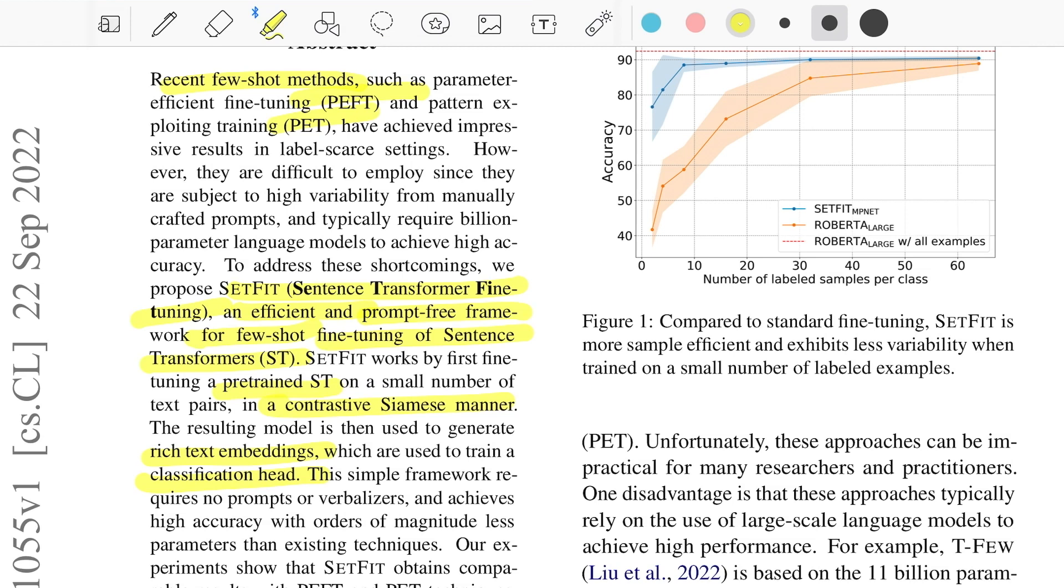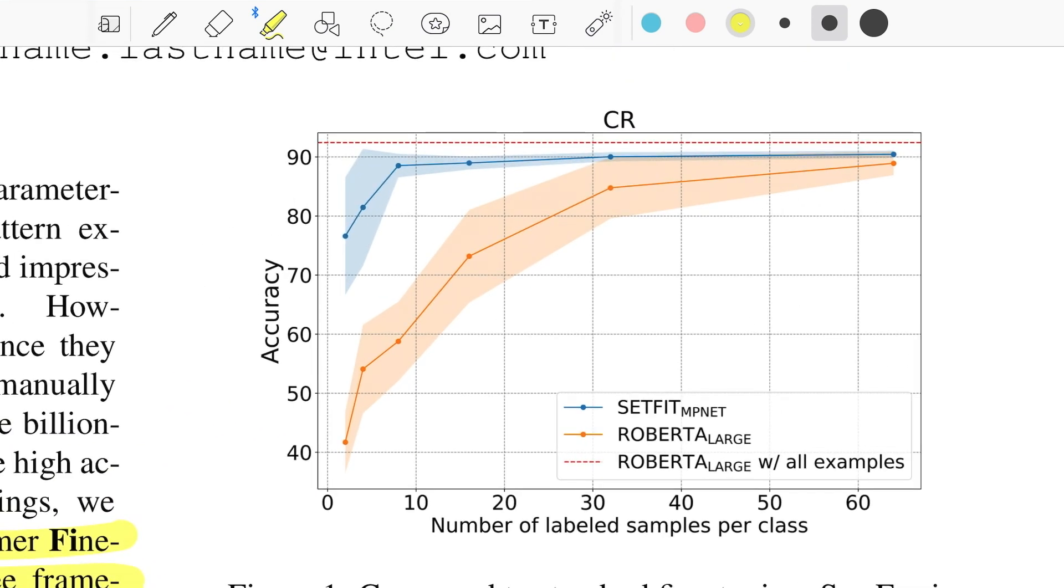Let's see this figure to understand how exactly it compares in case of a supervised model trained with all the examples and the way it scales as we increase the training size. On the x-axis you see number of labeled samples per class and y shows the accuracy number. As we go from 0 to 60 samples, we can see both RoBERTa Large and SetFit have an upward trend.